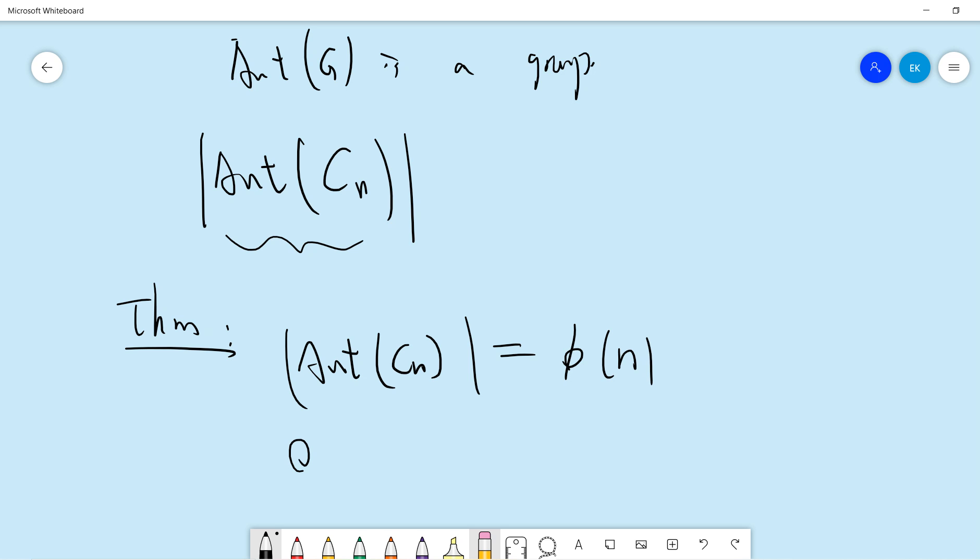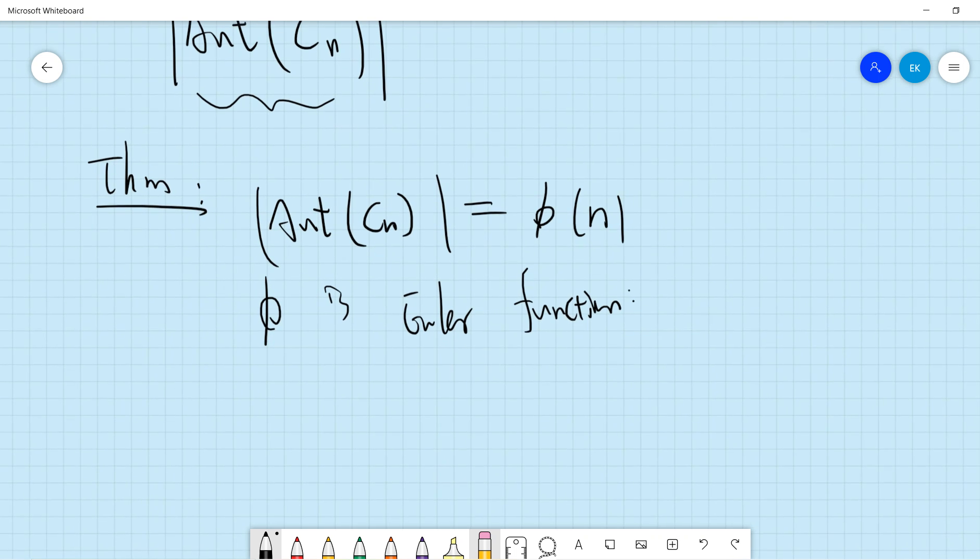Phi is the Euler function. Let me remind you that phi(n) is the number of integers p satisfying 1 less than or equal to p less than n such that gcd(p, n) equals one.